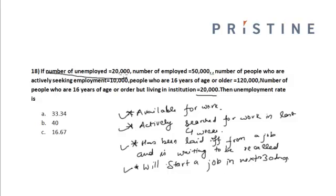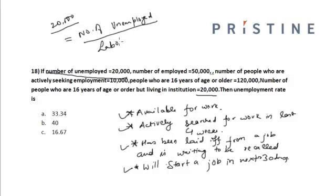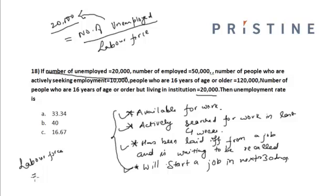In this case, the number of unemployed has been given as 20,000. The unemployment rate is equal to the number of unemployed divided by the labor force. The labor force is equal to the number of people either employed or actively seeking employment.